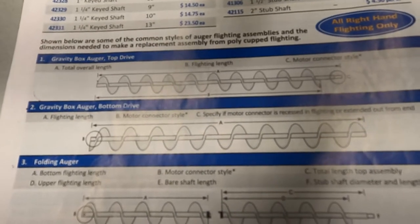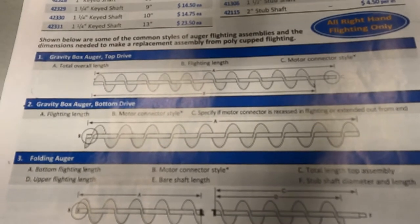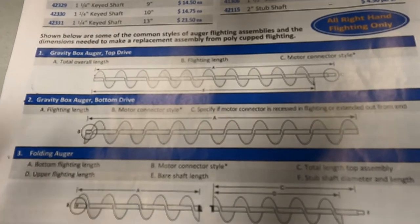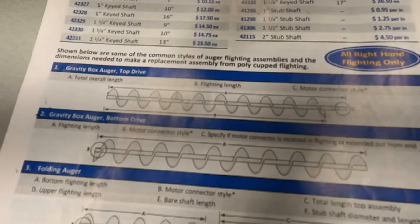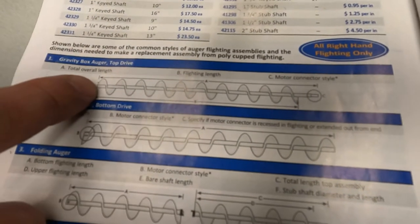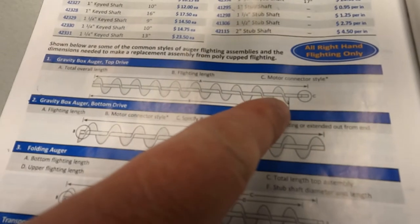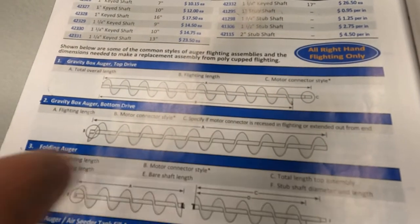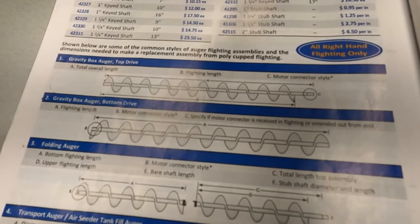So let's say you have a gravity box auger with a top drive. You will need to know the overall length as well as the flighting length and the motor connector style.